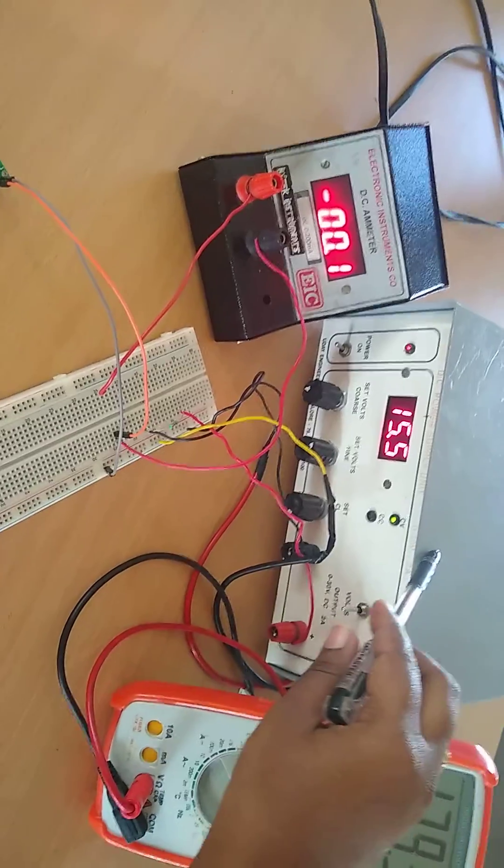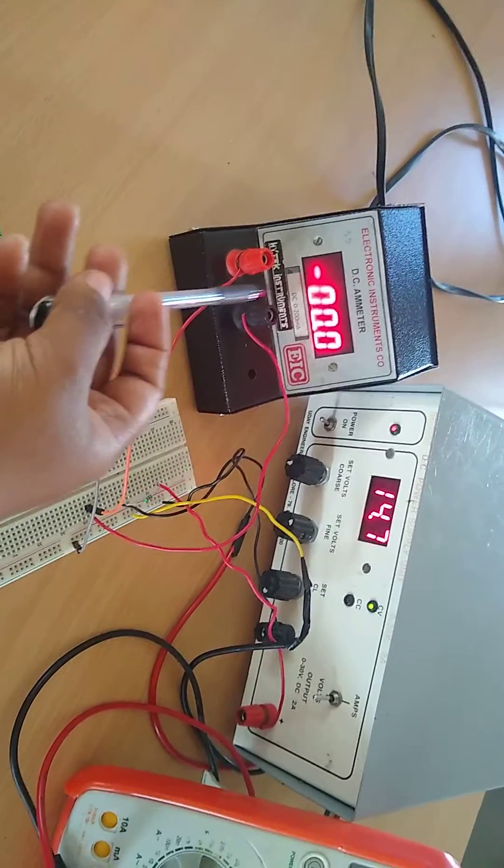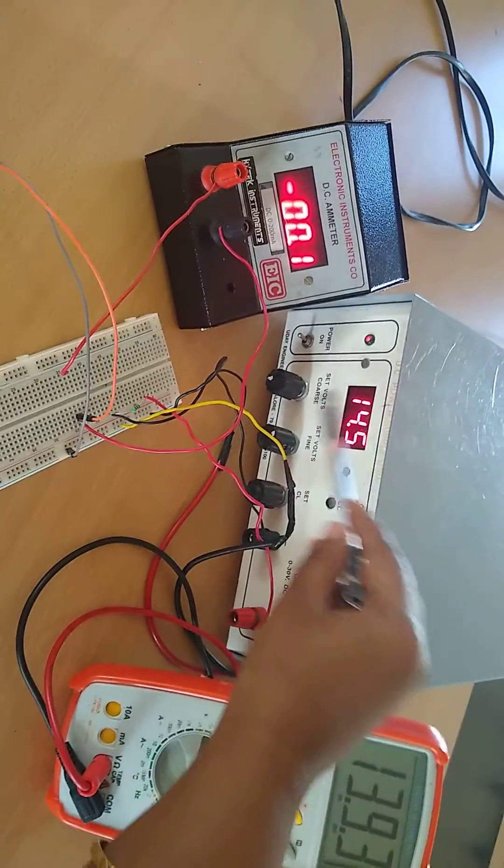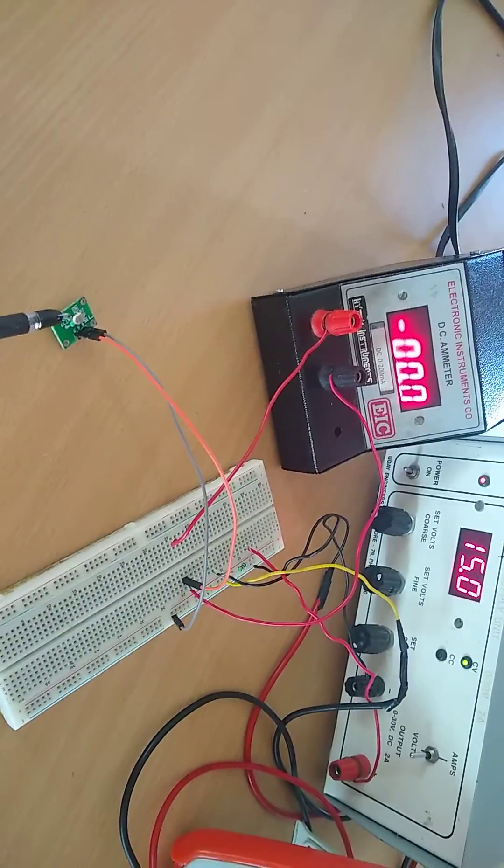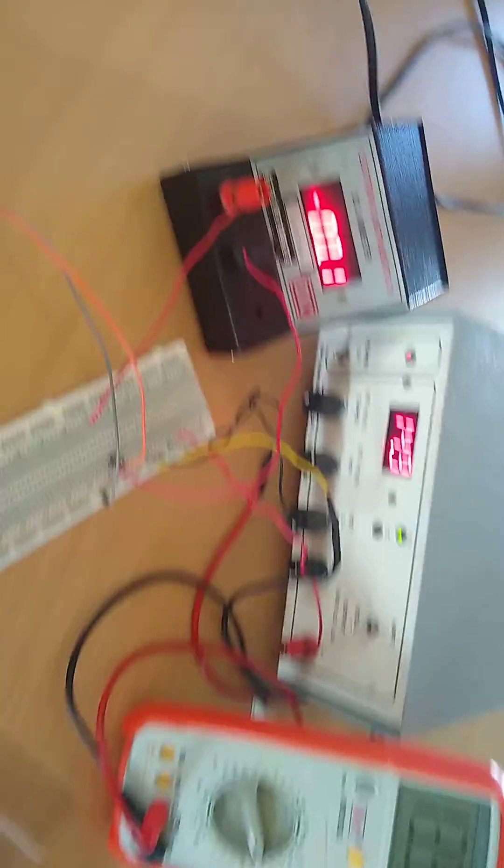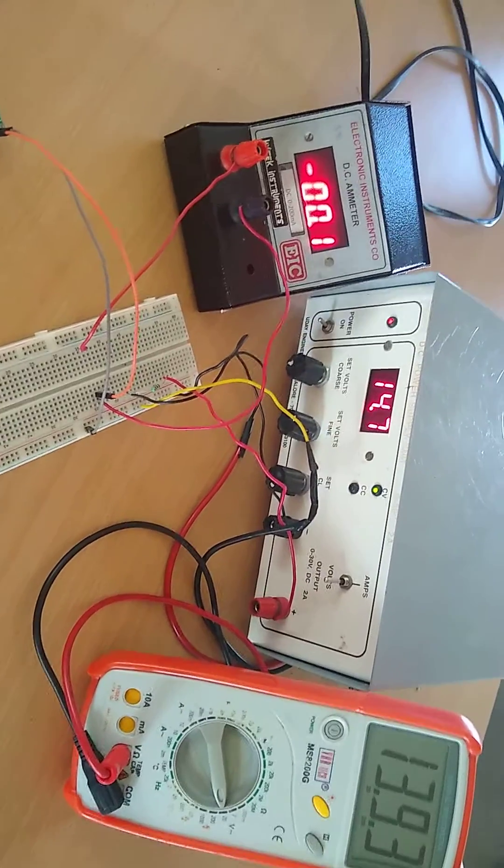As soon as we switch on the power supply, we can observe the ammeter. It is showing 0 amperes and voltmeter is showing 13.93. I have set the DC power supply to 15 volts. Now there is no light intensity falling on the LDR, so the ammeter is showing 0 amperes and the voltmeter is constant at 13.93, whatever the DC power supply we have provided.